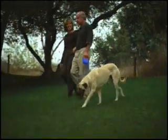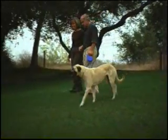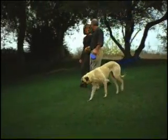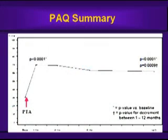Following treatment with either a walking program, angioplasty and stenting, or even bypass surgery, quality of life typically improves as patients can now walk longer distances and do their activities of daily living and be more productive. At the Heart Institute, we did a study looking at improvement in quality of life following angioplasty and stenting, and noted that 80% of patients had a better quality of life one year after their procedure.